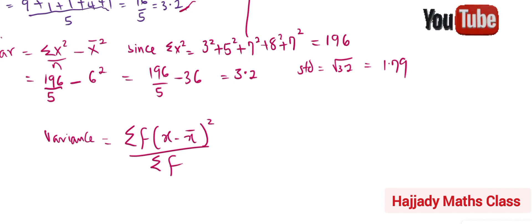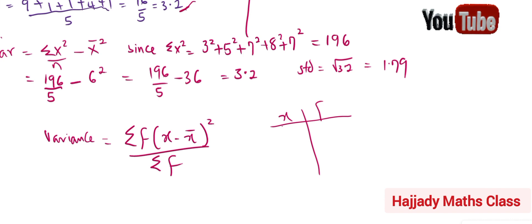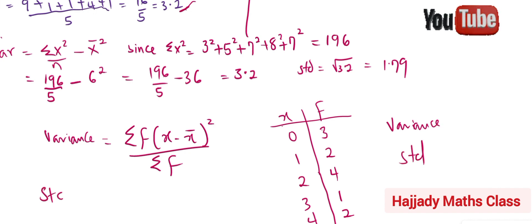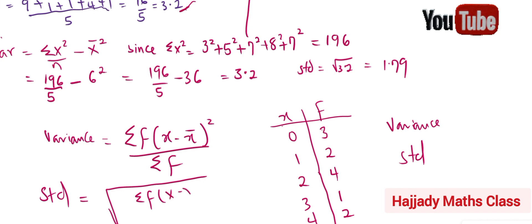Those are the two formulas we have in this case. You can use this as classwork and put the answer in the comment section. The data set has x values: 0, 1, 2, 3, 4 and corresponding frequencies: 3, 2, 4, 1, 2. Use this to calculate the variance and the standard deviation, remembering that standard deviation is the square root of summation f(x minus x̄)² over summation f.